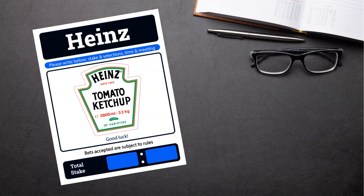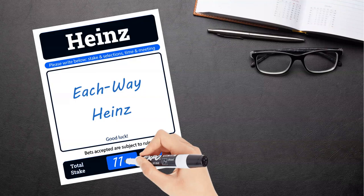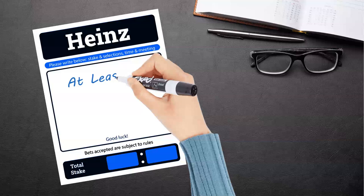On some sports it is possible to have an each-way Heinz. Doing so will double your number of bets to a total of 114. In order for you to receive any payout on the bet, at least two of the six selections will need to win, or place if you've opted to bet each way.